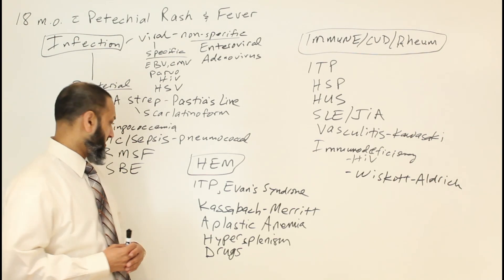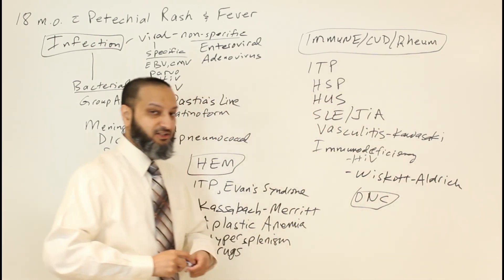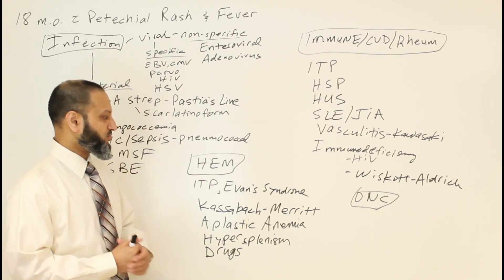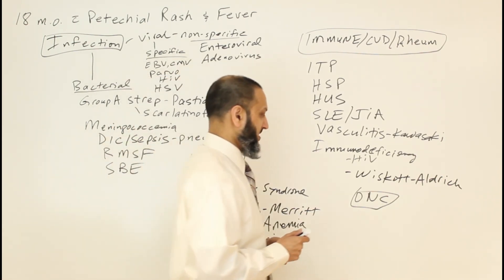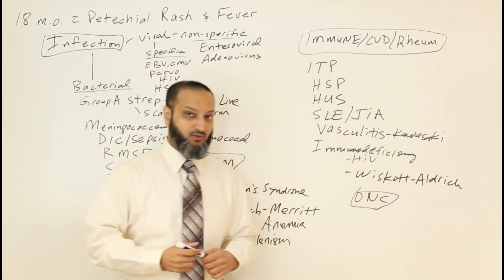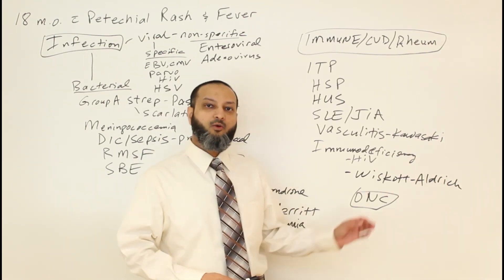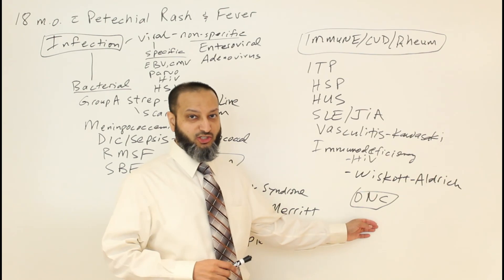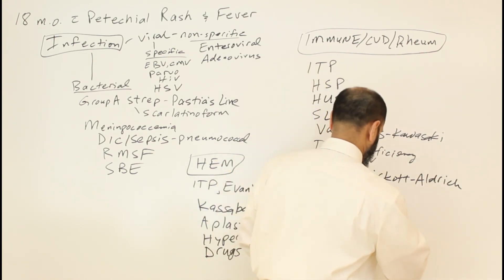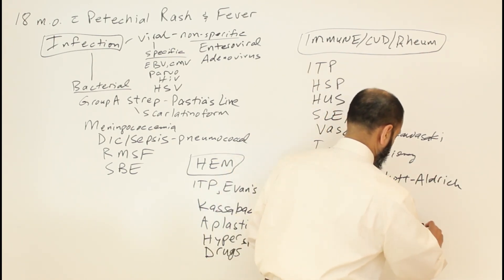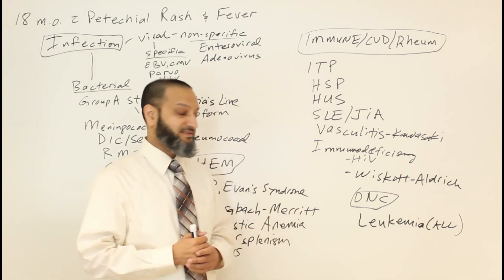Moving to our last category: oncology. Different malignancies can cause petechial rash and fever. One of the most important considerations is leukemia — ALL and other leukemias are a major consideration in a child presenting with petechial rash and fever. Leukemia, especially ALL, is an important differential.